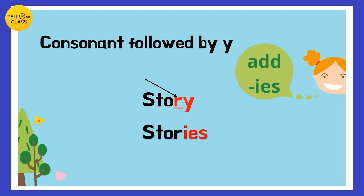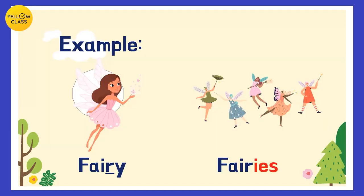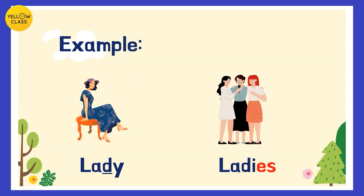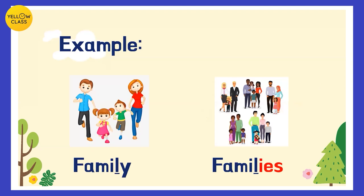Let's look at more examples. Fairy: one fairy, many fairies. There is a 'y' at the end and 'r' — a consonant — before 'y', so 'y' gets kicked out and 'ies' gets added. Another example: lady — one lady, many ladies. 'D' is a consonant, 'y' gets kicked out, 'ies' gets added. Family: 'l' is a consonant, 'y' is at the end, so 'y' gets kicked out and 'ies' gets added — family becomes families.